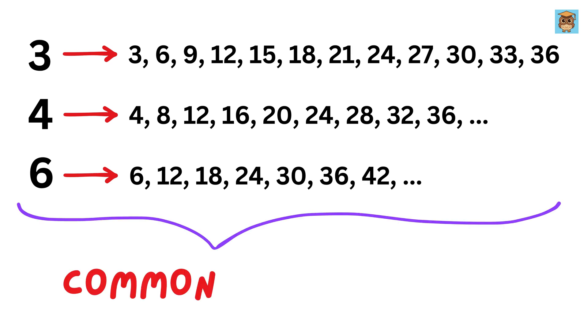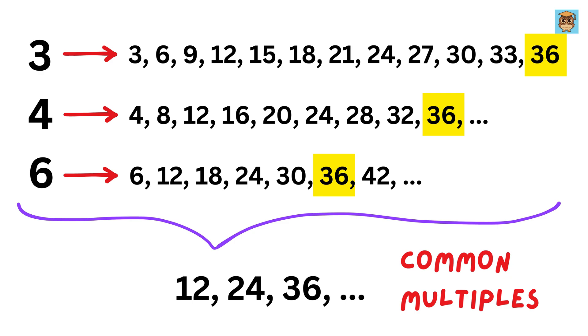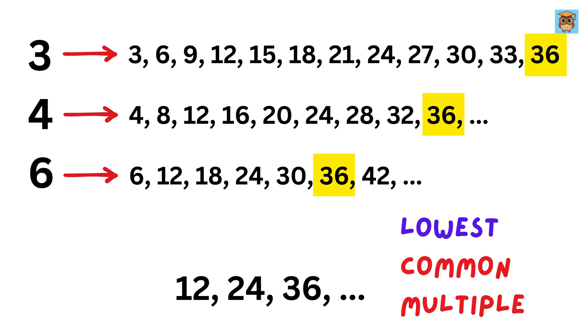Now, let's find the numbers that are common in all three tables. Looking at them, we see that 12 appears in all three of them, right? Similarly, numbers like 24, 36, and so on are also common in all three tables. So, these numbers are called common multiples of 3, 4, and 6. Now, what is the full form of LCM? It's least or lowest common multiple. Which means we have to find the smallest common multiple of all these numbers. Since 12 is the smallest number among all the other common multiples, therefore LCM of 3, 4, and 6 is 12.